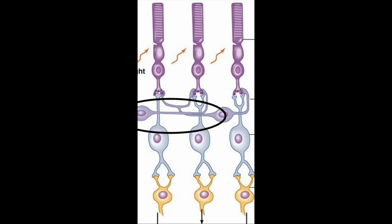Horizontal cells connect these photoreceptors and allow for the process of lateral inhibition.